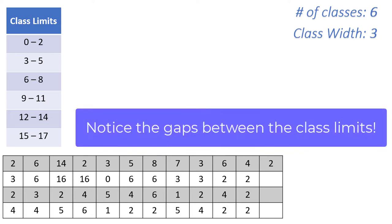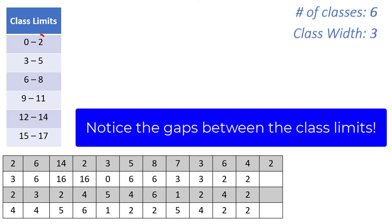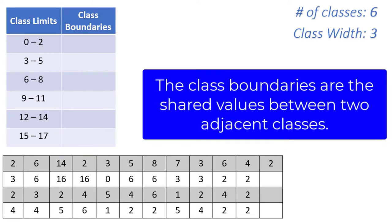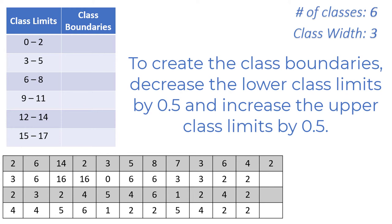Notice that our class limits have gaps — the upper class limit of the first class is 2, but the next class doesn't begin until 3. A histogram plotted this way would include gaps between all the bars, but traditionally a histogram displays no gaps. For that reason, we need to create what are called class boundaries, which are shared values between adjacent classes. Simply decrease the lower class limits by 0.5 and increase the upper class limits by 0.5. For example, decreasing 0 by 0.5 gives us a negative 0.5 lower class boundary, and increasing 2 by 0.5 gives us a 2.5 upper class boundary.